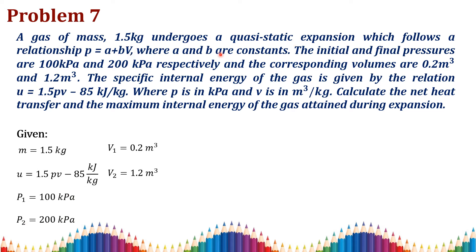In that way the expansion process in this problem follows the relation p = a + bV, where a and b are constants. The mass is 1.5 kg. The initial and final pressures are 100 kPa and 200 kPa, so initial condition is state 1 and final condition is state 2: p1 = 100 kPa, p2 = 200 kPa. The corresponding total volumes are V1 = 0.2 m³ and V2 = 1.2 m³.